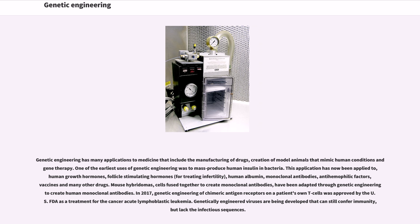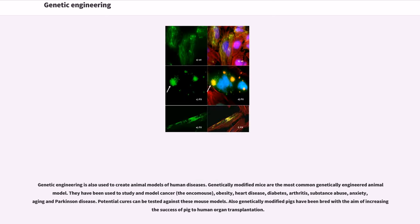In 2017, genetic engineering of chimeric antigen receptors on a patient's own T cells was approved by the US FDA as a treatment for the cancer acute lymphoblastic leukemia. Genetically engineered viruses are being developed that can still confer immunity but lack the infectious sequences. Genetic engineering is also used to create animal models of human diseases. Genetically modified mice are the most common genetically engineered animal model. They have been used to study and model cancer (the oncomouse), obesity, heart disease, diabetes, arthritis, substance abuse, anxiety, aging, and Parkinson's disease. Potential cures can be tested against these mouse models. Also, genetically modified pigs have been bred with the aim of increasing success of pig-to-human organ transplantation.